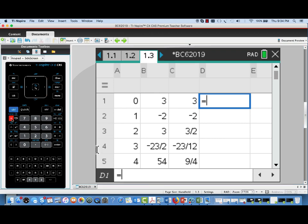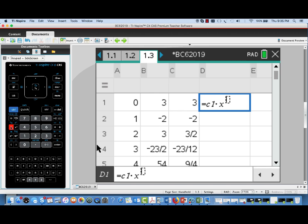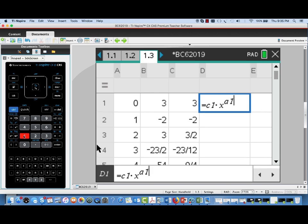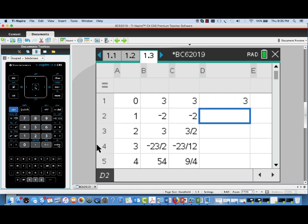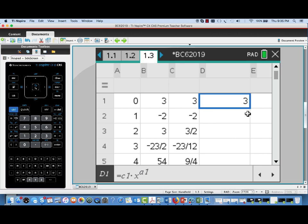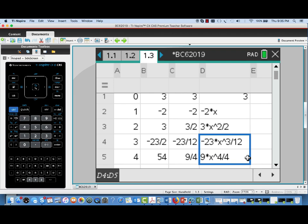Now each one of these coefficients is going to be multiplied by the corresponding power of x. So that value 3 is our constant term. We'll multiply that value in cell C1 times x to the 0, and the 0 is found in cell A1. I'm using cell references because that's going to then allow me to easily mimic this calculation for the other corresponding values. There we have negative 2 times x to the 1st, 3 halves times x squared, negative 23 twelfths times x cubed, and finally 9 fourths times x to the 4th.